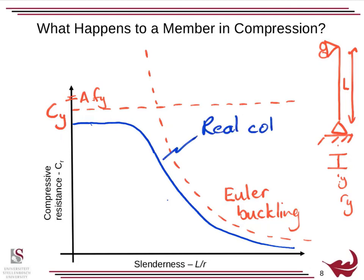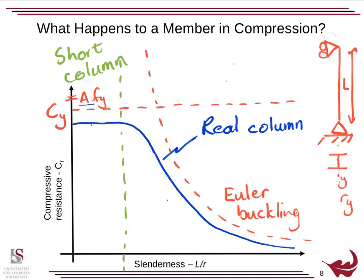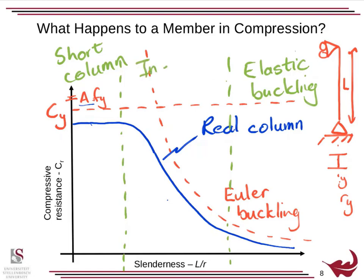If you plot the resistance from a whole bunch of tests and join them up with a curve, you end up with a curve that's horizontal initially and then drops off, falling underneath both limiting curves. This would be a real column. A real column has residual stresses, it's also not perfectly straight, and it's not perfectly geometrically accurate. So we fit a curve below the two red curves but linked to them. We have a short column zone, an elastic buckling zone, and in between the two, what's called inelastic buckling — it buckles but it's not perfectly elastic at that stage.